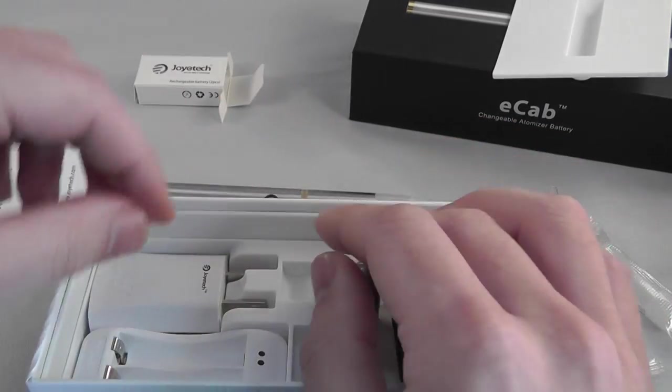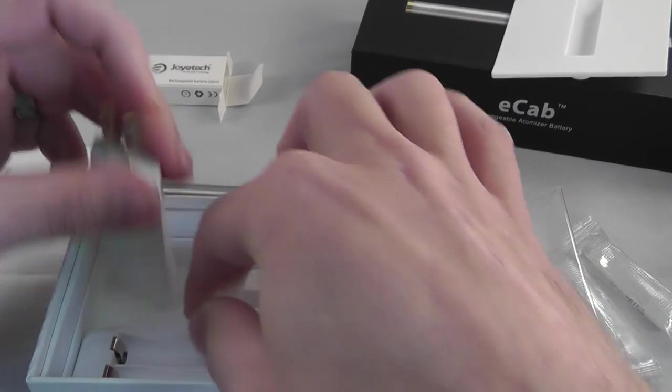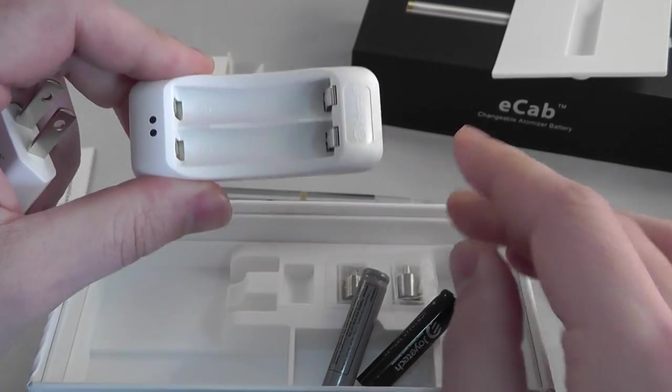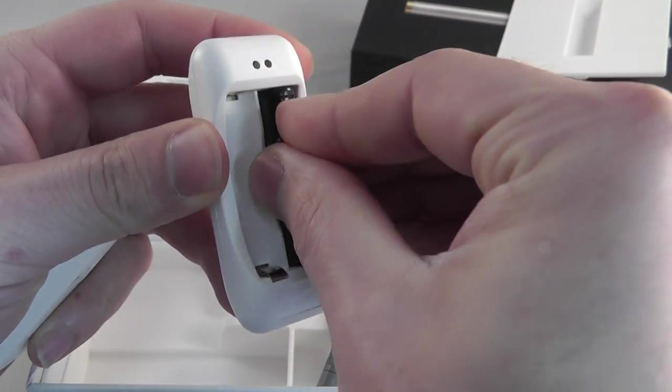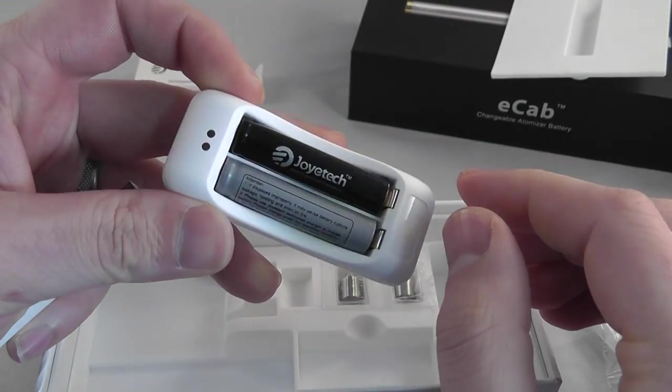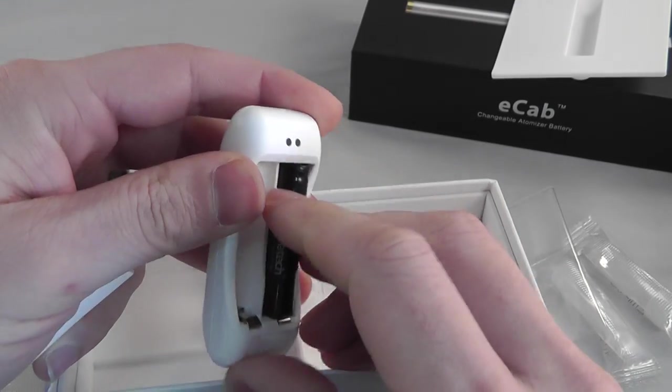So let's set these batteries down here and let's take a look at the charger equipment here. Alright, so we have, this is kind of a neat little charger. You can kind of see how this works. You just basically stick the batteries down in here and you can charge both batteries at one time. Which is pretty awesome, it's something that you aren't able to do with a 510 or an Ego kit.